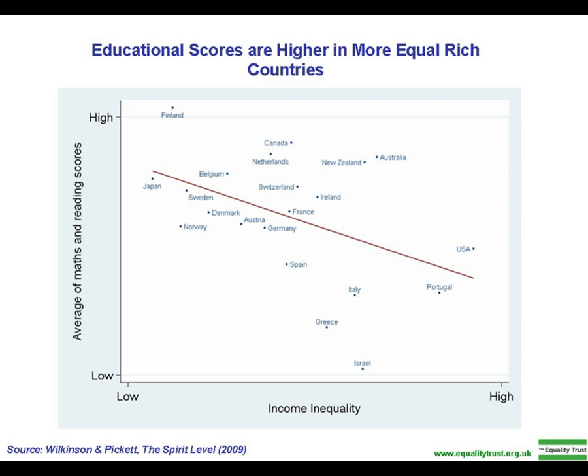Hall and Jones have calculated from international data that on average the returns on education are 13.4% per year for the first four years of schooling (grades 1 to 4), 10.1% per year for the next four years (grades 5 to 8), and 6.8% for each year beyond eight years. Thus someone with 12 years of schooling can be expected to earn, on average, 1.134^4 × 1.101^4 × 1.068^4, or approximately 3.161 times as much as someone with no schooling at all.